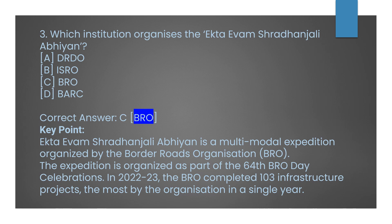Question number three: which institution organizes the Ekta Evam Shridhanjali Abhyaan? Option A: DRDO. Option B: ISRO. Option C: BRO. Option D: BARC. The correct answer is Option C, BRO — the Border Roads Organization. The Ekta Evam Shridhanjali Abhyaan is a multi-modal expedition organized by the Border Roads Organization as part of the 64th BRO Day Celebration. In 2022–2023, the BRO completed 103 infrastructure projects, the most by the organization in a single year.